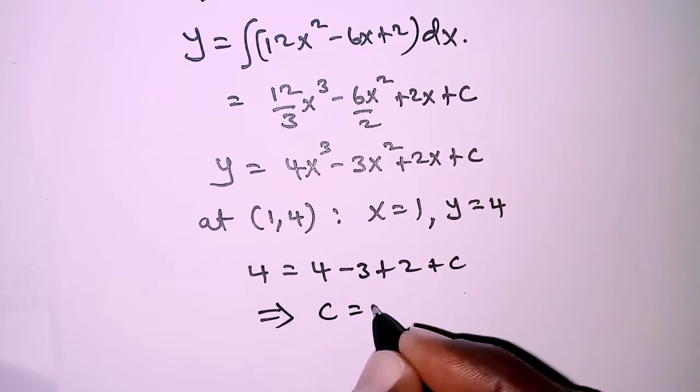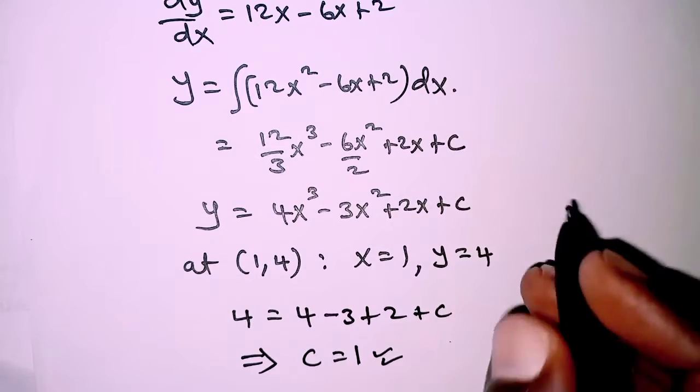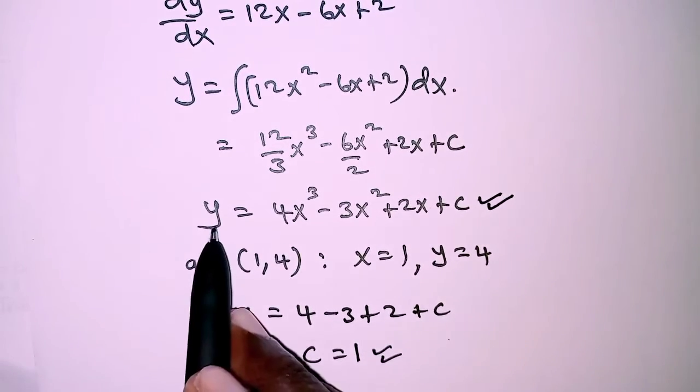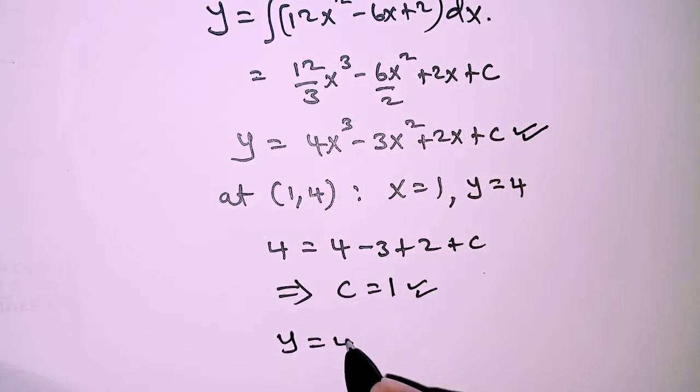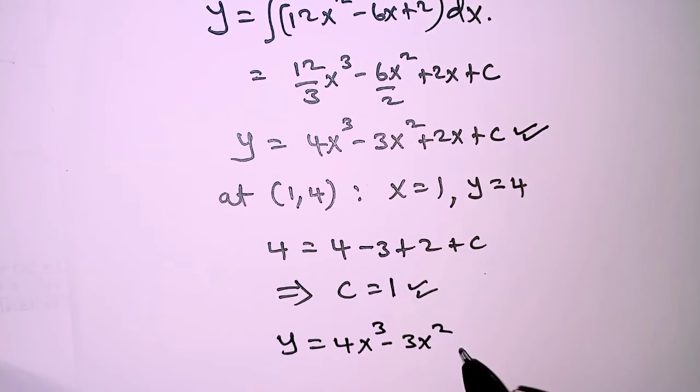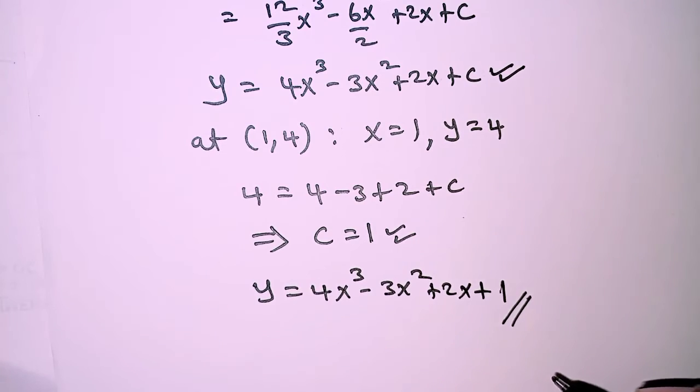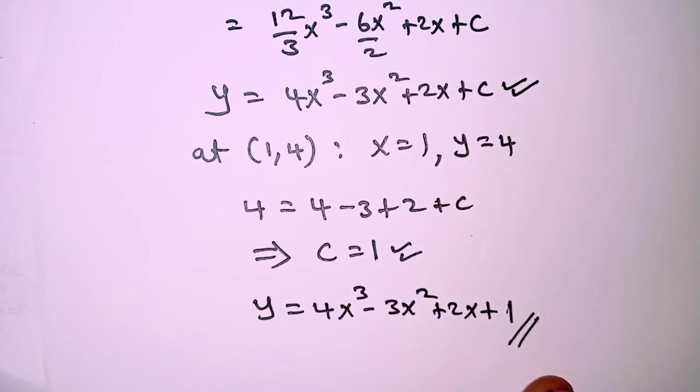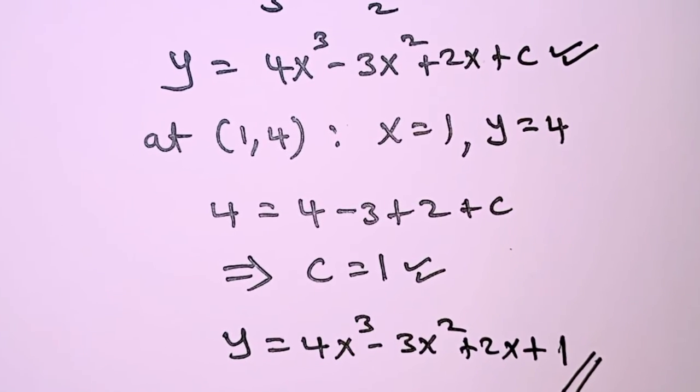When this is worked out, you realize that C is 1. Given the value of C, we substitute it back in the equation. So we have y = 4x³ - 3x² + 2x + 1. That is it for this question. Thank you for watching, hope to see you in the next video.